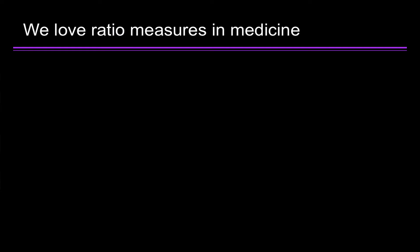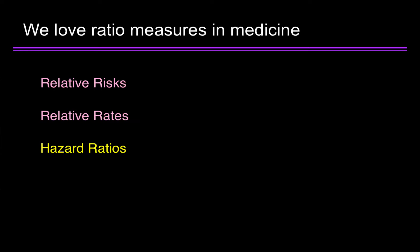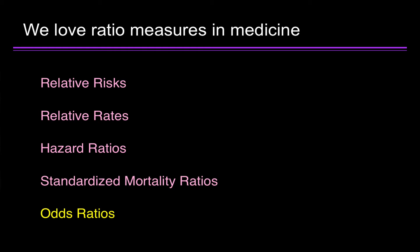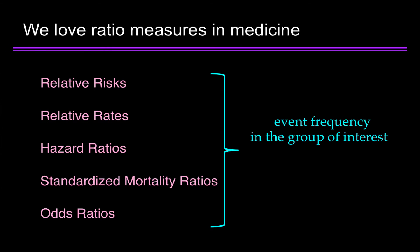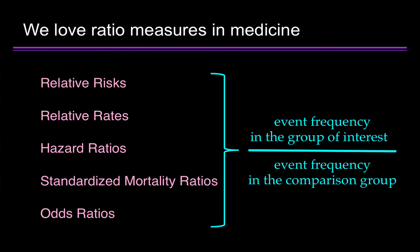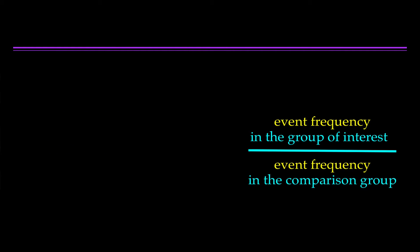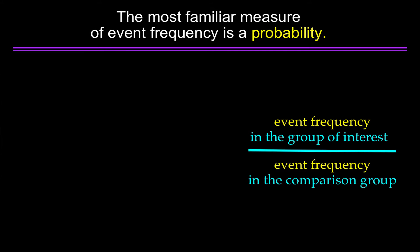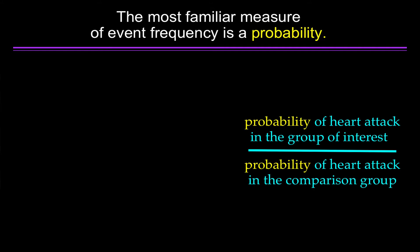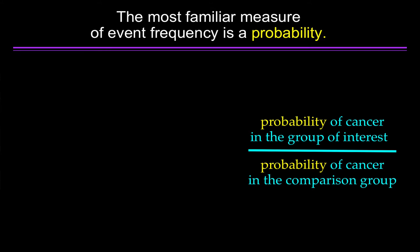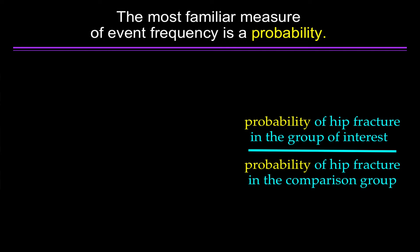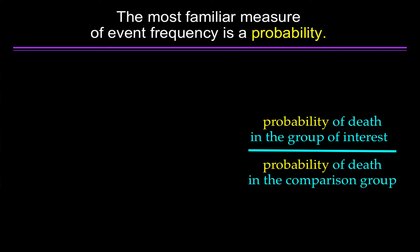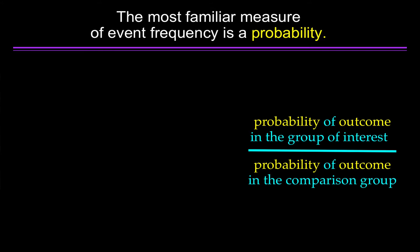The reason is because we love ratio measures in medicine. We have relative risks, relative rates, hazard ratios, standardized mortality ratios, odds ratios. All of these are ratios — something about the event frequency in the group of interest over the event frequency in the comparison group. The most familiar measure of event frequency is a probability. So it may be the probability of heart attack in the group of interest over the probability of heart attack in the comparison group, or the probability of cancer, hip fracture, or death in one group versus another.